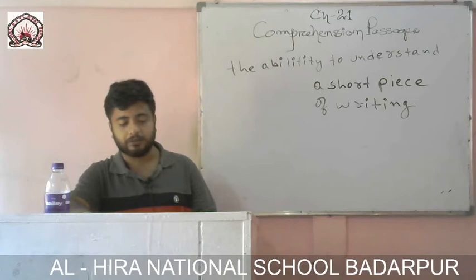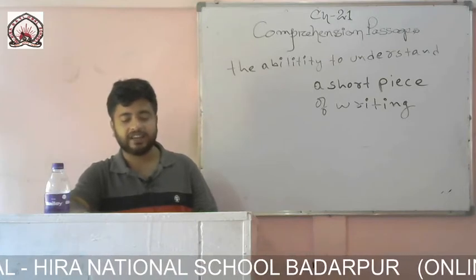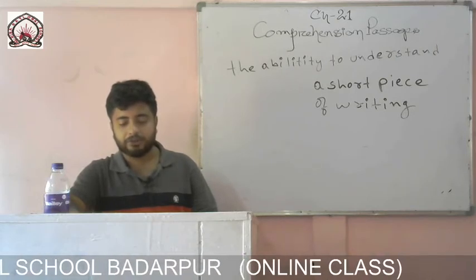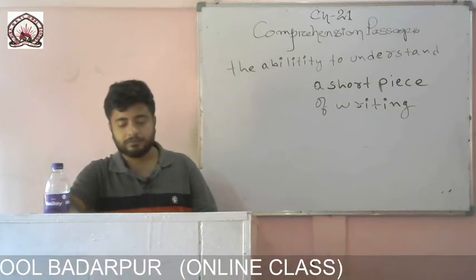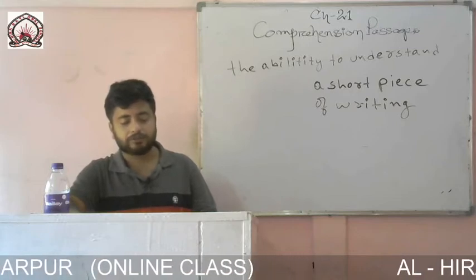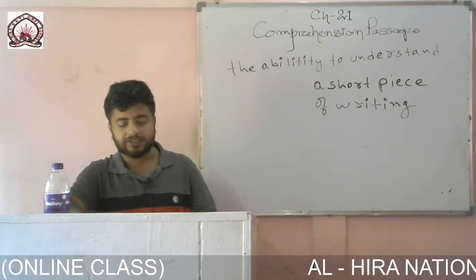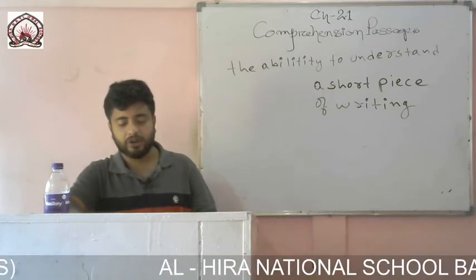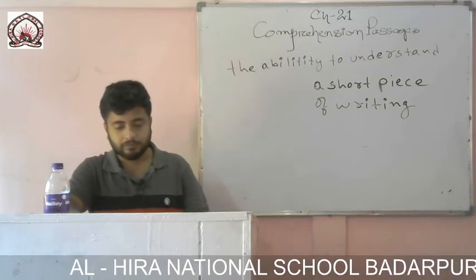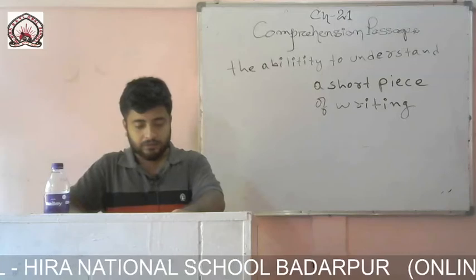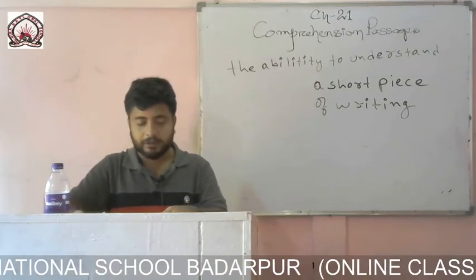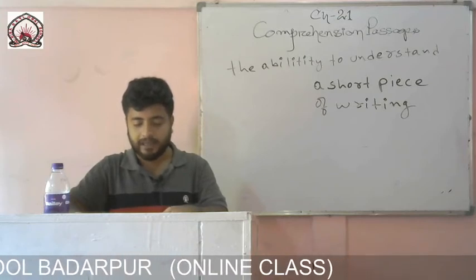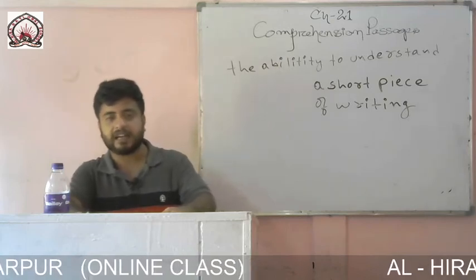Question number 2: Gandhiji attained the position of a saint and a martyr due to his belief in: A) simplicity, B) unity and diversity, C) truth and non-violence, D) God. On page number 175, last paragraph, you will see that Gandhiji's life was devoted to truth and non-violence. Option number C is the correct answer.